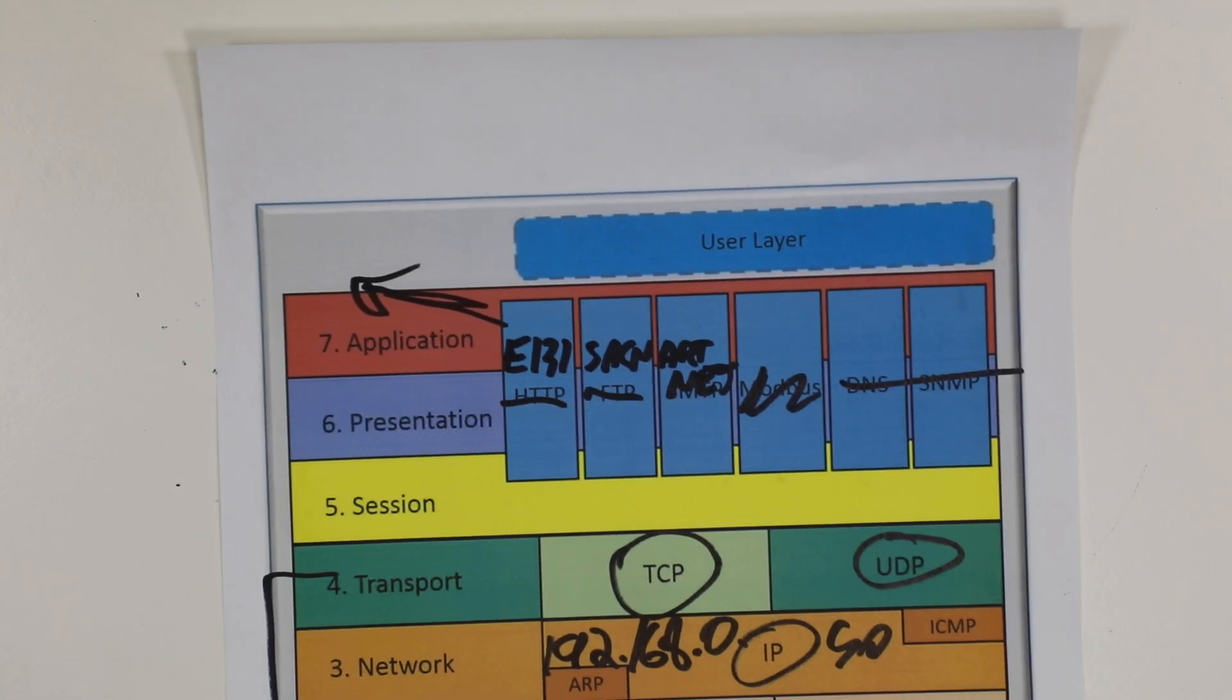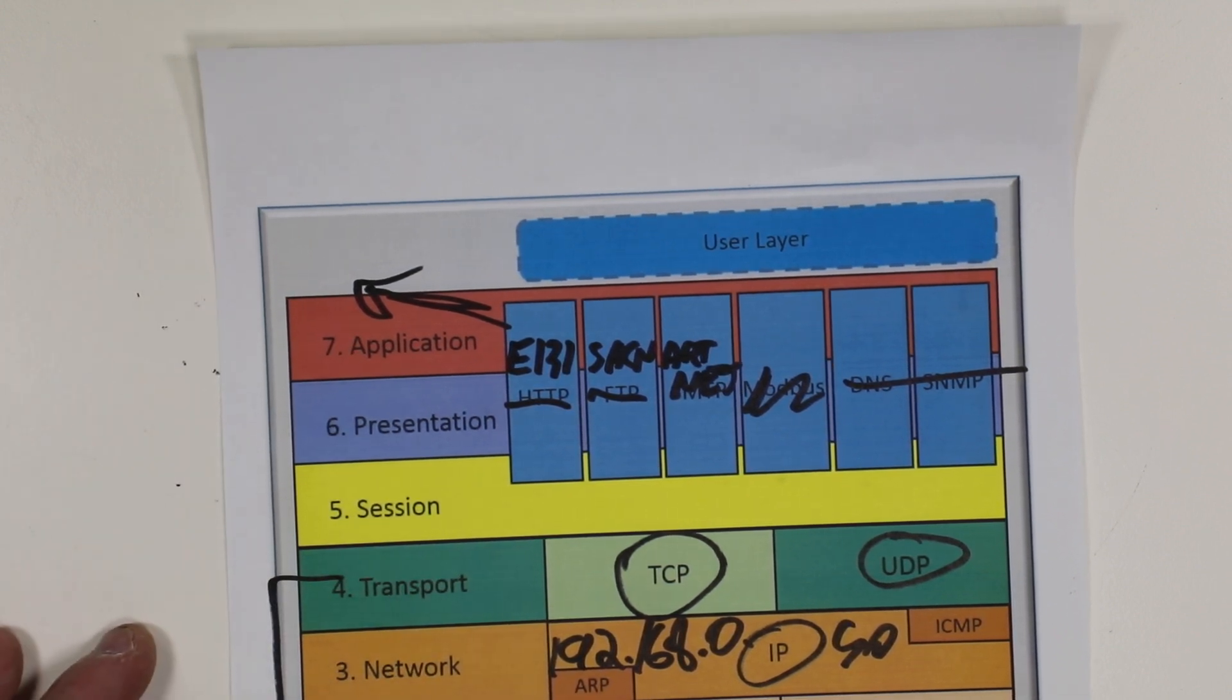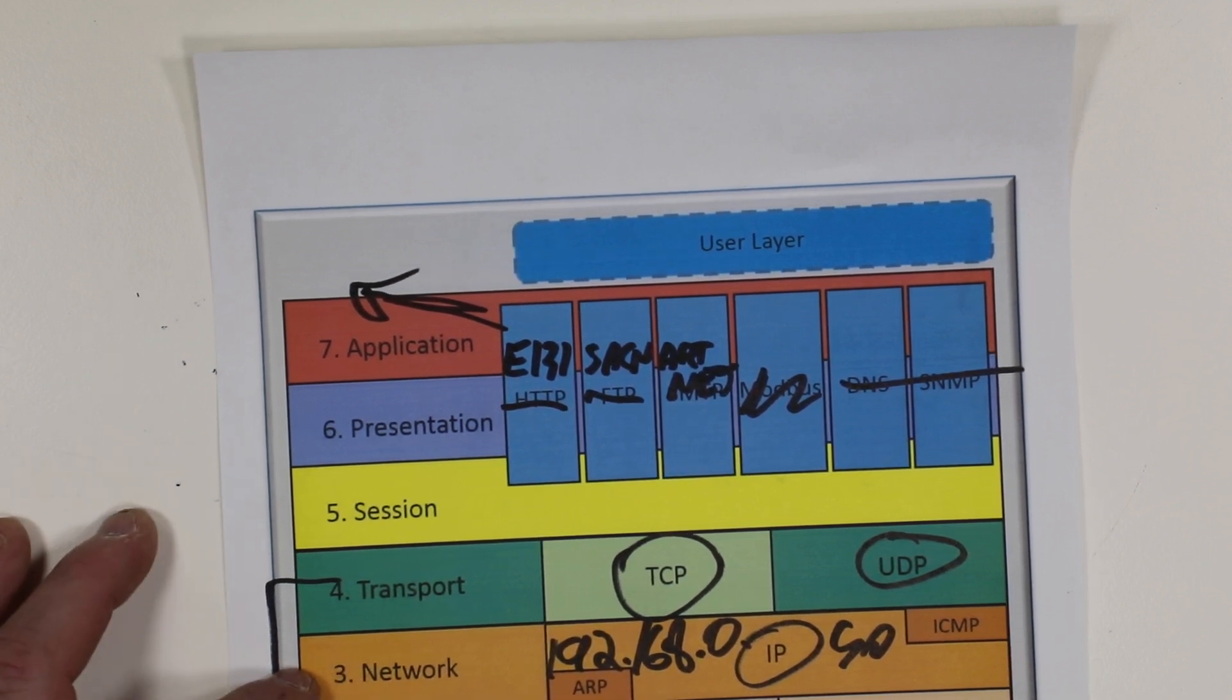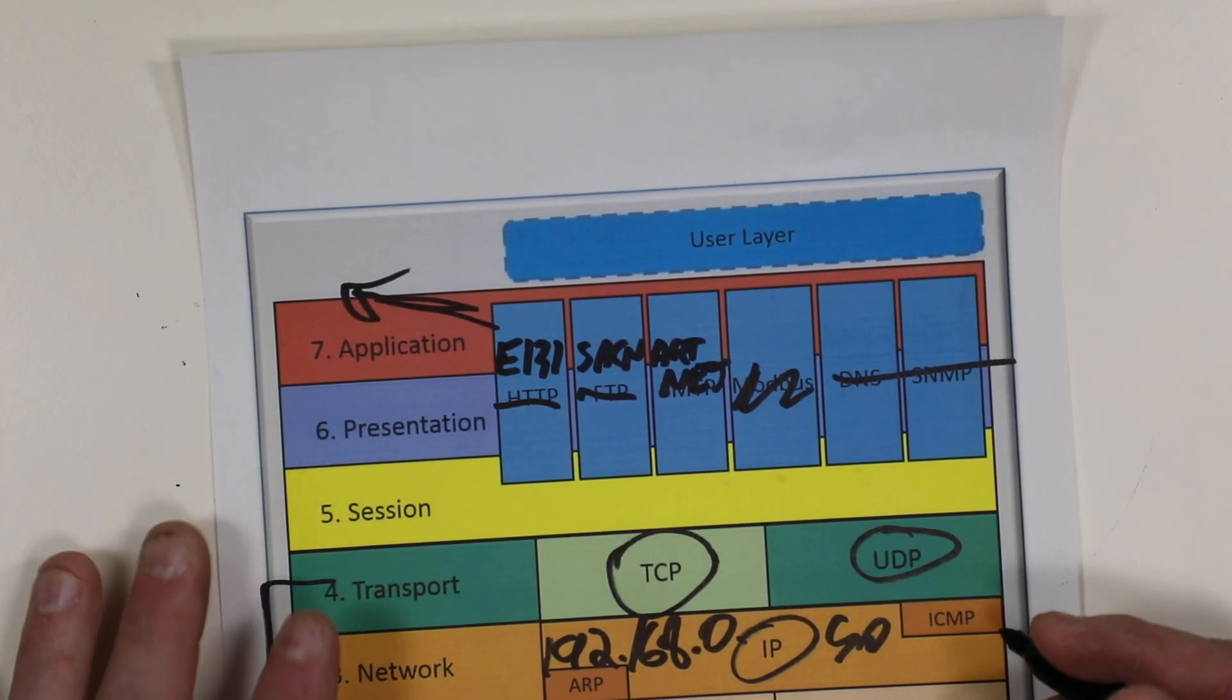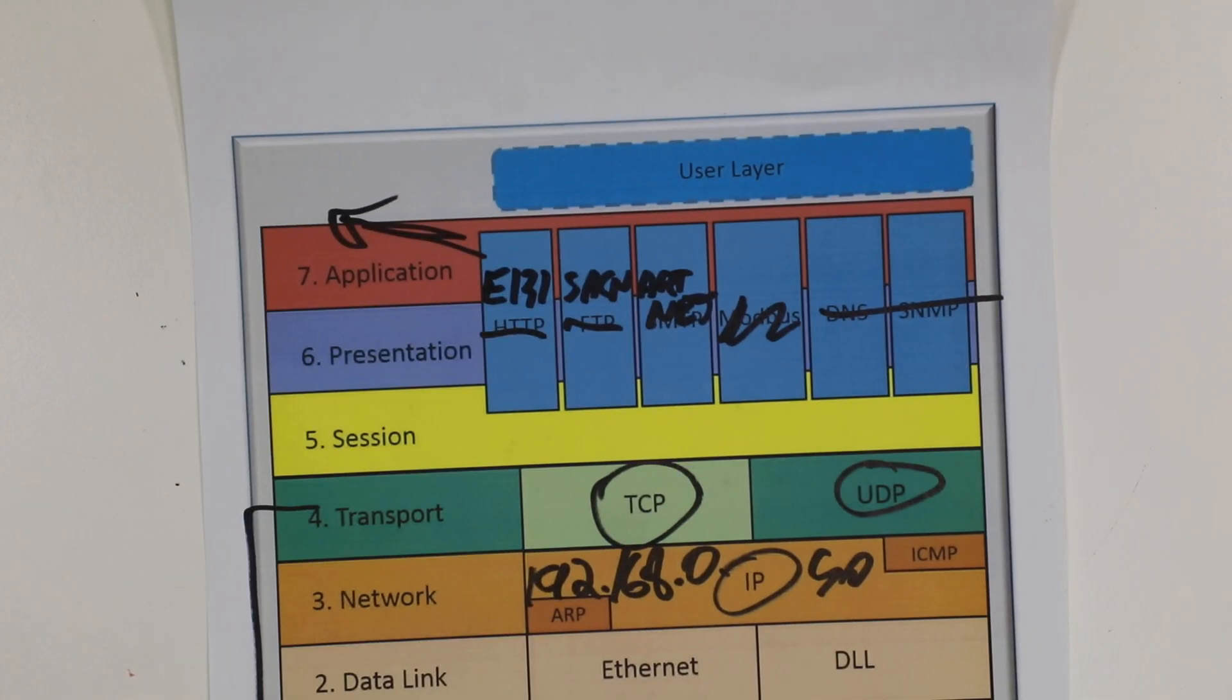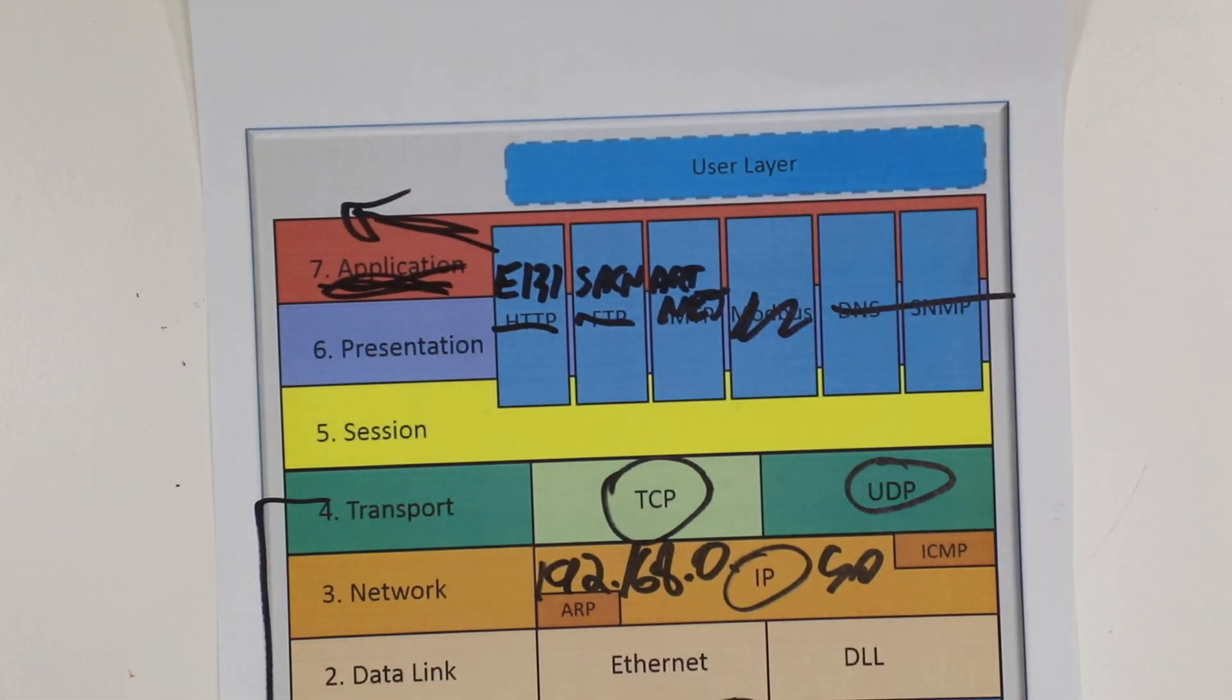So again, all these transport protocols are transferred over a specific physical media. And that method of transferring the data electrically is specific to each type. The most two common being Ethernet or RS-485. All right. So our next video is going to talk about this application level and how we exchange data and the differences between those protocols.